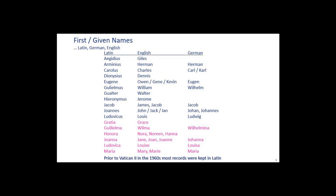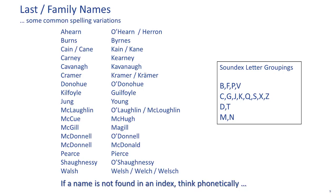Nora — you're going to see this time and time again; it's a very popular Irish name and usually gets translated as Nora, but sometimes it's Noreen and sometimes it's Anna. Johanna is really hard — for the Irish it's probably Jane, but it could be Joan or Joanne. For the Germans it's probably Johanna. Ludovica would be Louise or Louisa. Maria would be Mary or Marie, and in German, Maria. These are all going to be written in Latin, and some of them are very logical, but some are not easy to figure out.